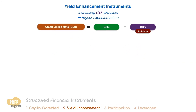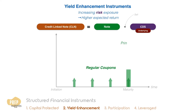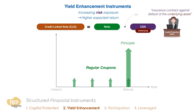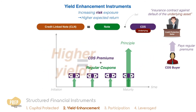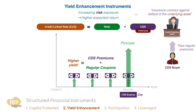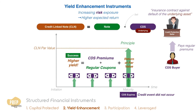Let's break down the payoffs from the two instruments. Firstly, a note by itself pays regular coupons and the return of principal at maturity. To enhance the yield of this note, the issuer takes the position of a CDS seller on some underlying asset. A CDS can be likened to an insurance contract against default of the underlying asset. As a seller, the issuer receives regular premiums from the buyer of the CDS. Such regular premiums can be used to top up the regular coupons to bump up the yield of the credit-linked note. At the expiration of the CDS, if the credit event did not occur, the issuer can redeem the CLN at par value. The issuer has successfully increased the yield of the note through selling the CDS.